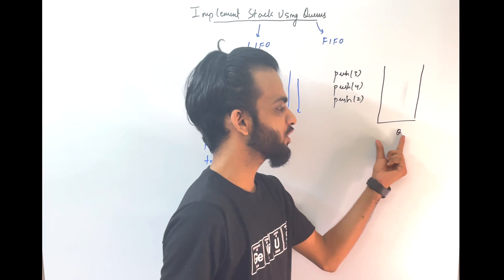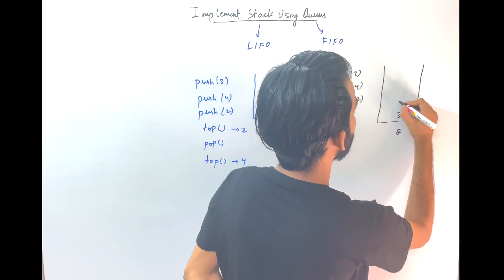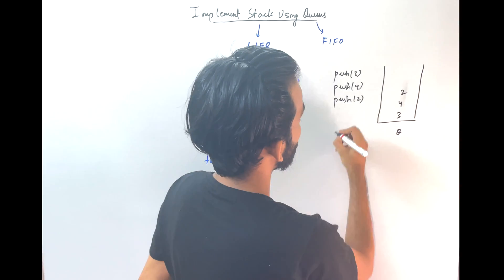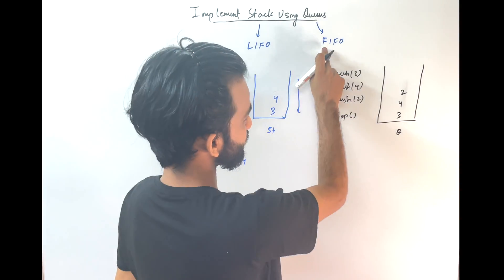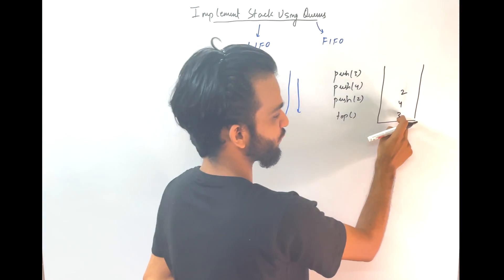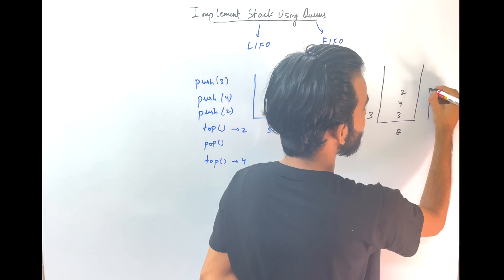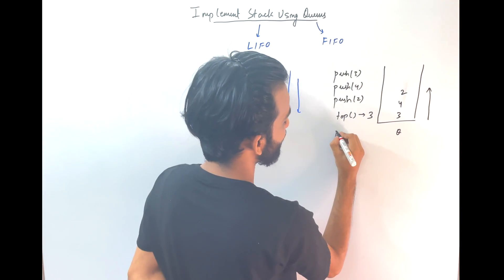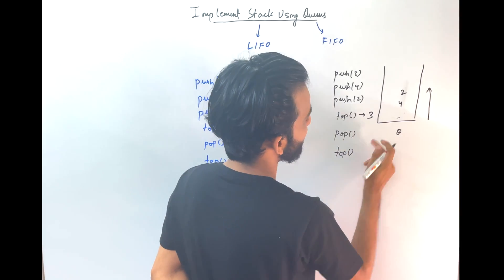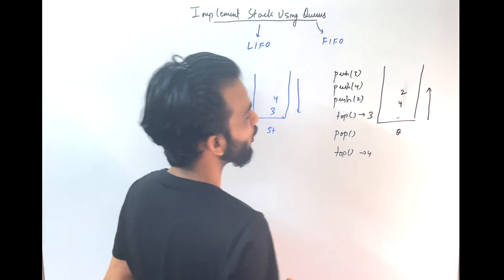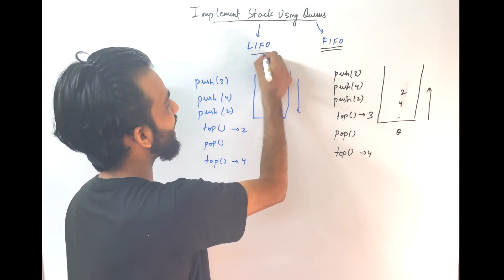Now let's understand what a queue is. Let's take the same operations. First 3 will get in, then 4, then 2. Whenever someone says give me the topmost element — first-in first-out — which is first entered? Three. So the topmost element becomes 3. If I say pop, 3 will go off. Then if I say another top, it will be 4. So it works in the opposite way — first-in first-out — whereas a stack is last-in first-out.